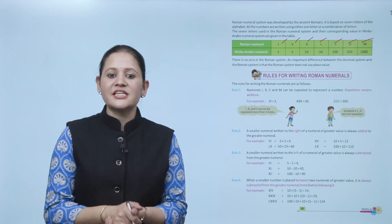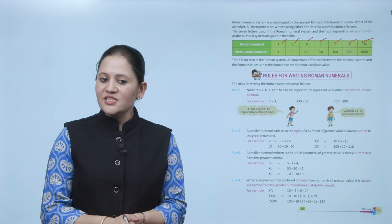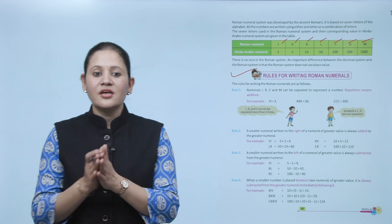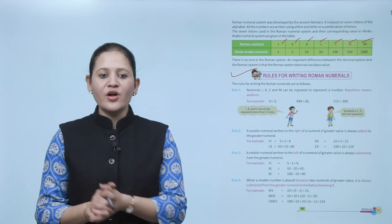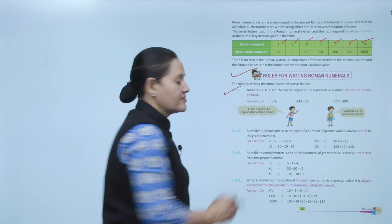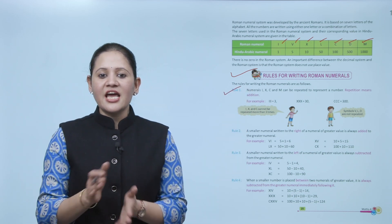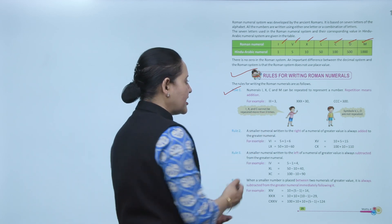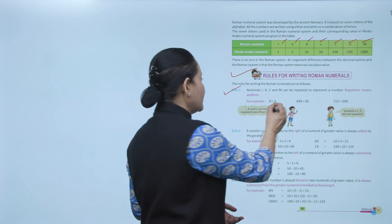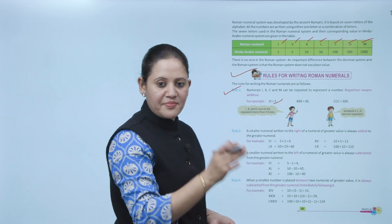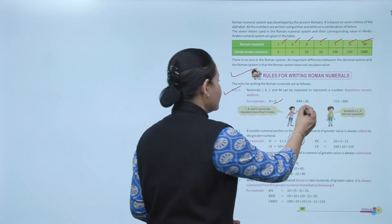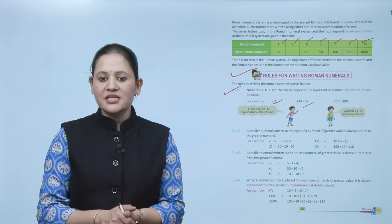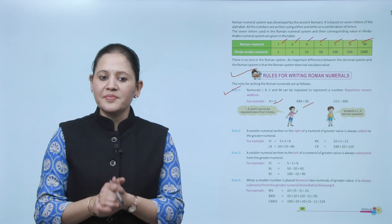Next is rules for writing Roman numerals. The rules for writing Roman numerals are as follows. Rule number one: Numerals I, X, C, and M can be repeated to represent the number. Repetition means addition. So here I is repeated three times, means 1 + 1 + 1, that is 3. XXX, three times repeated, means 10 + 10 + 10, that is 30. I, X, and C cannot be repeated more than three times. Symbols V, L, and D are not repeated.